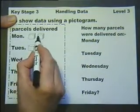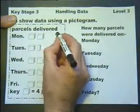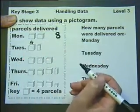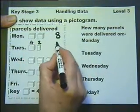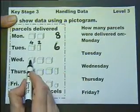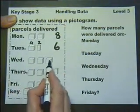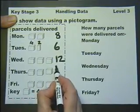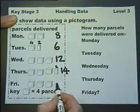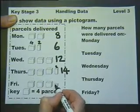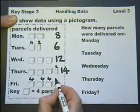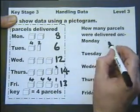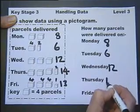So we've got two parcel symbols, representing two fours — that's eight parcels. This is half a parcel symbol, so that must be two parcels, giving six altogether. Three fours are twelve, and then a half at the end makes fourteen. Another row has four, four, four, and one half — so that's thirteen. This gives us the number of parcels delivered on each day during the week.